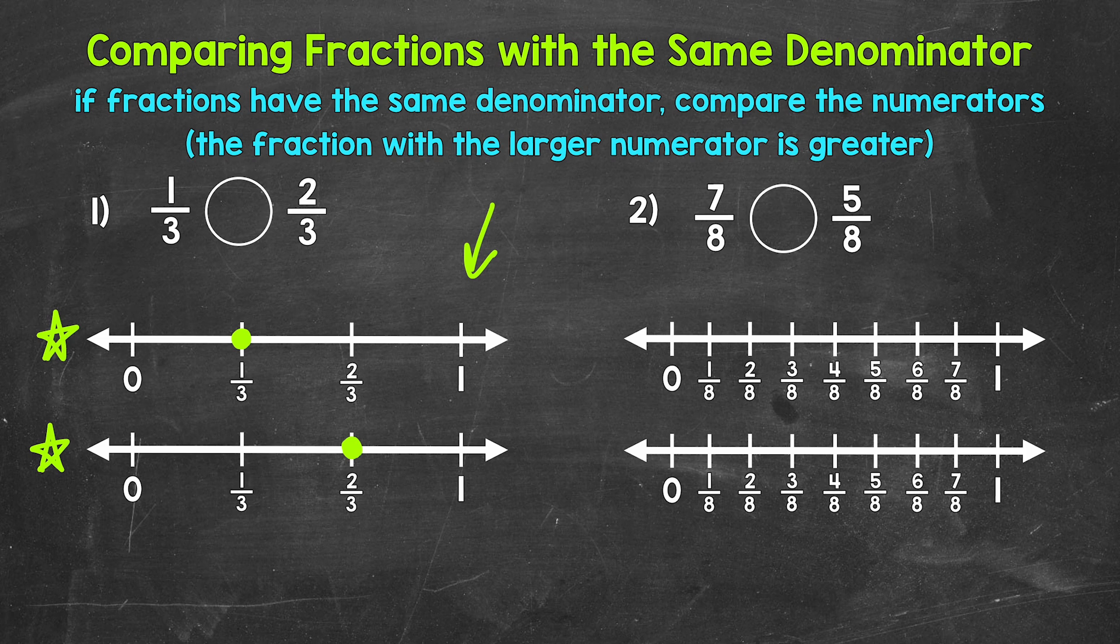Which fraction is further to the right on the number line? Which is greater? Two-thirds. Two-thirds is greater.